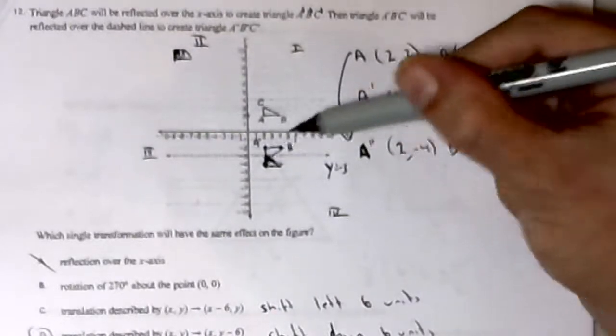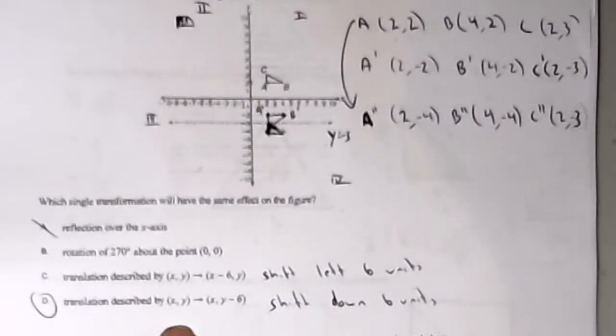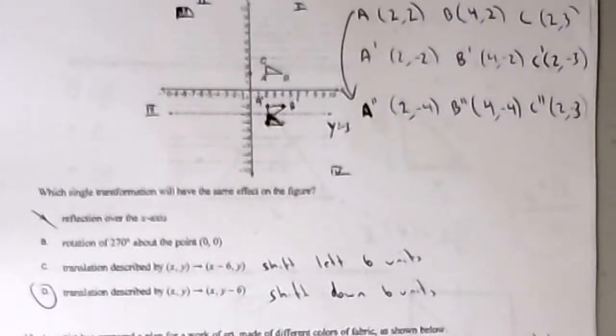So one transformation is shifting the entire triangle down 6 units. Using this notation: x comma y becomes x comma y minus 6. You don't change the x value; the y value, you subtract 6 from it. It will shift the figure down 6 units.